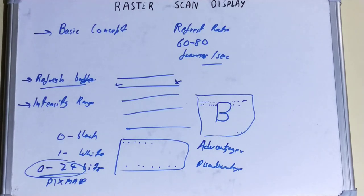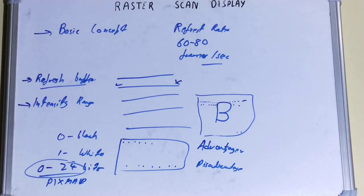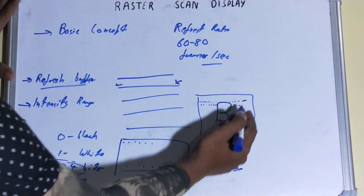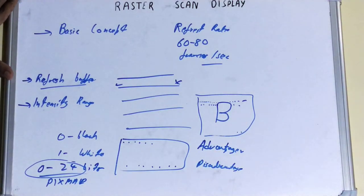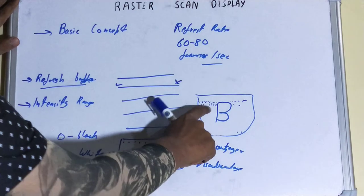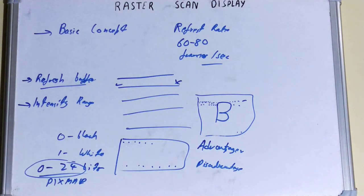However, raster scan display does have some disadvantages. First, the resolution is comparatively lower than random scan display. Second, high memory is required — because data about the intensity value of all pixels across the entire screen has to be stored, rather than only the area where the picture is to be displayed. For example, even where the letter 'B' is not present, it still has to store a zero value for those spots, resulting in very high memory usage.